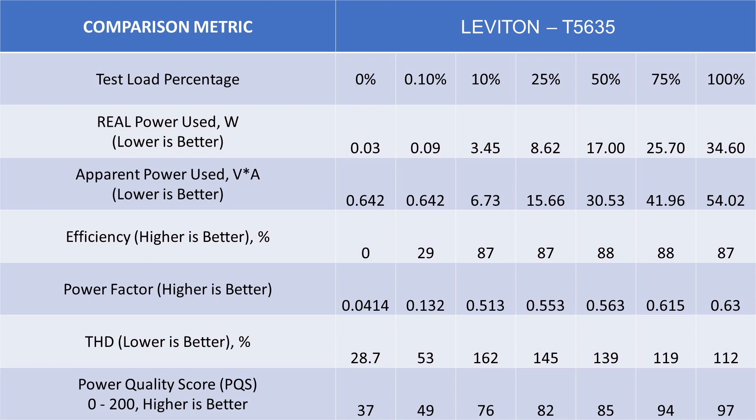You can see that the power quality actually stays pretty high across all of the different numbers. So even at idle, it's 37, which is among the best in class. This device does suffer from similar issues as the other power wall mount outlets in that the apparent power is actually fairly high, even at idle. You can see the very low power factor at idle.